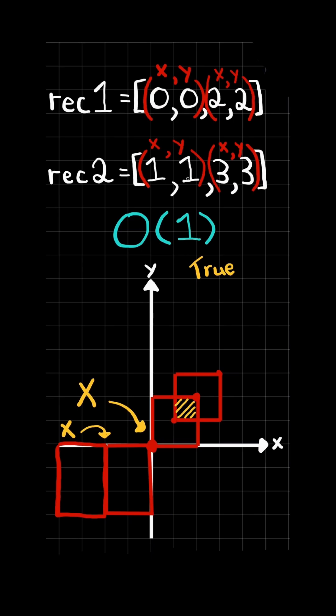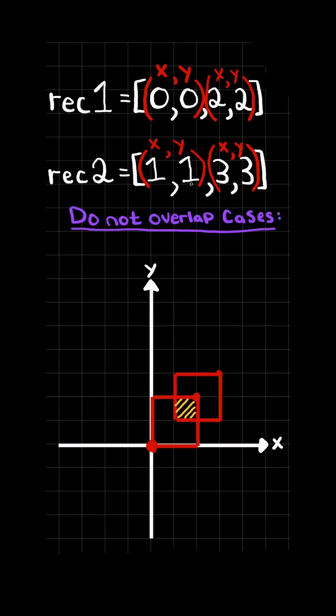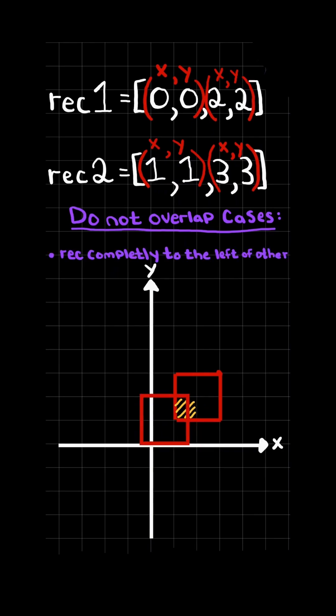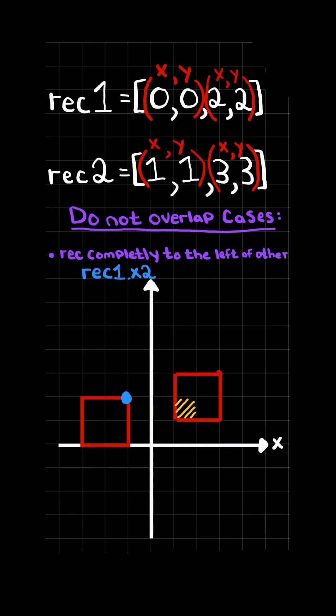We will solve this in constant time. Let's consider the cases where the two rectangles do not overlap. This occurs when one rectangle is completely to the left of the other — in other words, when the top right x coordinate of the first rectangle is less than or equal to the x coordinate of the bottom left corner of the second rectangle.